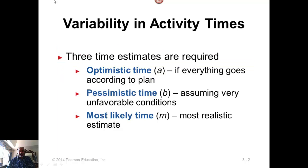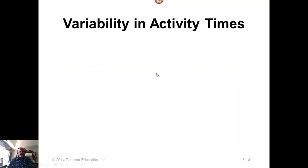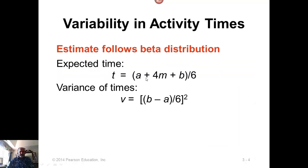Beta distribution has three time estimates: optimistic time on the left-hand side, pessimistic time on the right-hand side, and most likely time in the middle, with the pessimistic time kind of extended further out than a. If we assume beta distribution, then the expected time for the activity can be computed using this formula. This comes from beta distribution: a plus 4m plus b over 6. And variance for activities will come from this function. It doesn't include m, but it is b minus a over 6, the whole thing squared, or b minus a squared over 36.